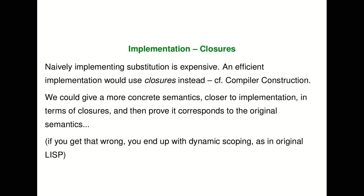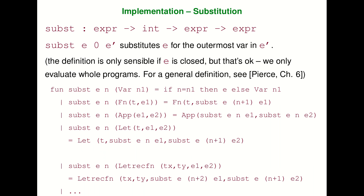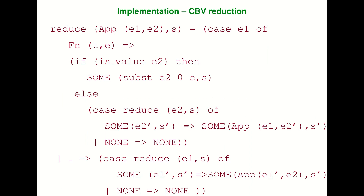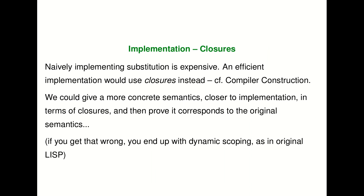Implementing substitution naively is quite expensive. When you do a substitution of E into a body, you have to do a recursive traversal of the whole program to find all possible variable sites — this is O(n) in the size of the program. So tree interpreters are not a great implementation. When you take compiler construction, you'll see more efficient implementations such as closures. Closures make variable lookups much faster — they do substitution lazily and go from linear to basically constant time.